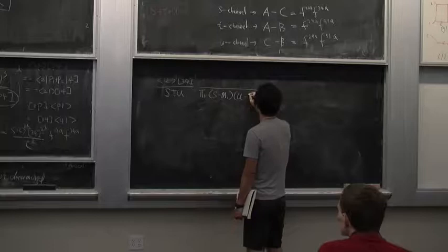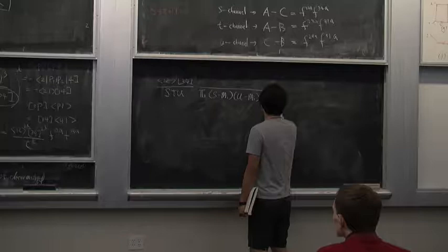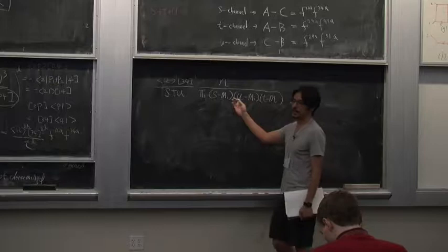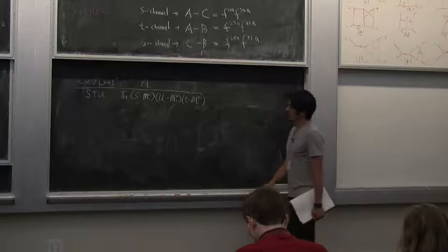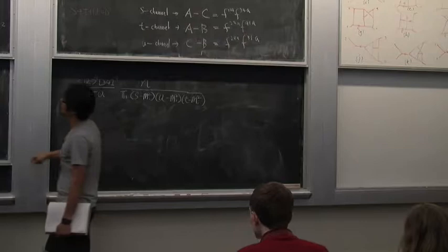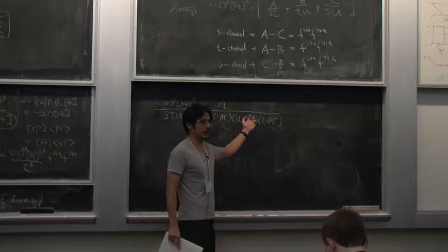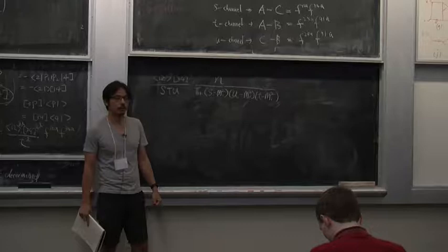The UV-completed four-point function will involve a bunch of massive poles. Because of permutation invariance, once a massive particle appears in the S-channel, it should appear in all three channels — S, T, and U — with some numerator factor. I haven't told you the masses or the number of massive particles yet; I'm just guessing the answer. The constraint is that on each physical pole, the residue must correspond to the product of three-point amplitudes.